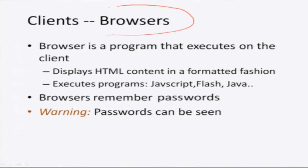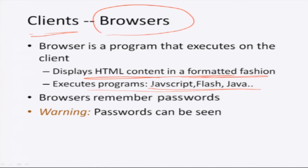So essentially we have what are called browsers sitting on clients. The program that you use to access the internet is called a browser, and it is running on the client machine. The browser is a program which will display the HTML content coming from the server — hypertext markup language — in a properly formatted fashion, like bold, italics, multiple columns and so on. The browser can also execute programs written in JavaScript, Flash, or Java, which help in creating interactive websites, animations, and displaying images.